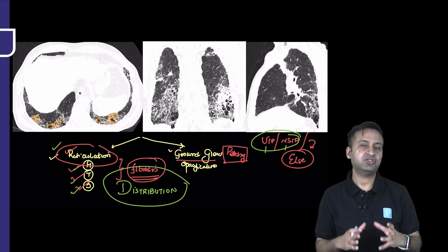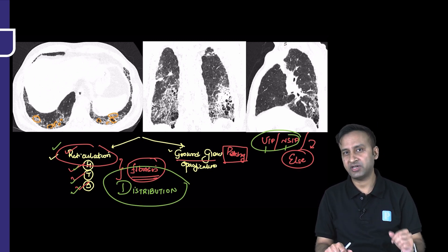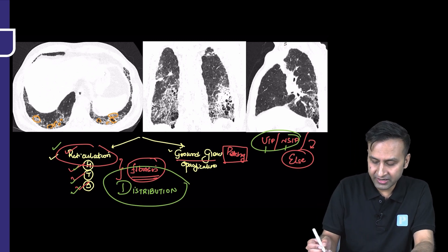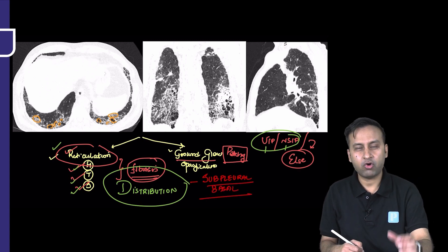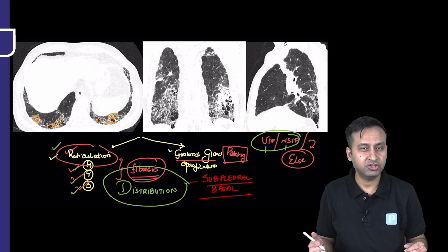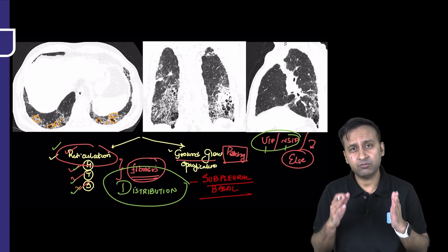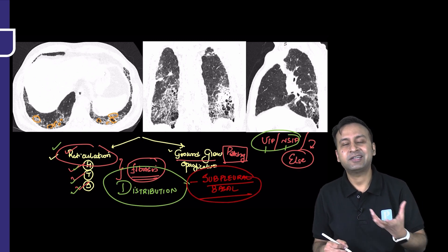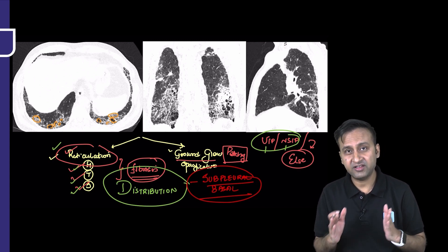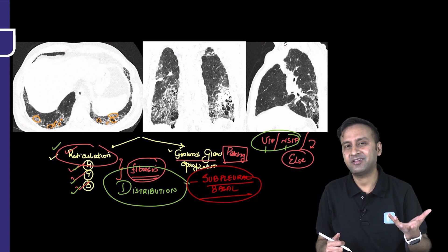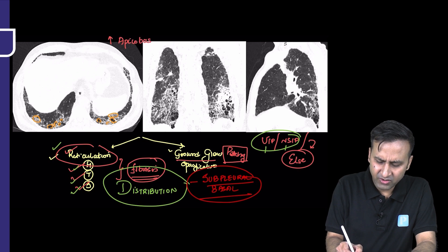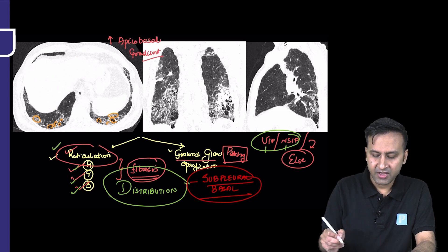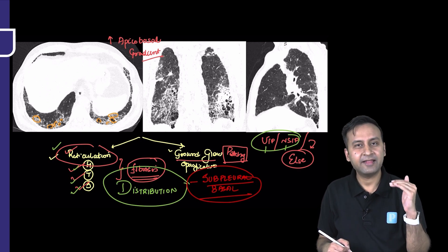In fact, in HRCT of ILDs, the entire diagnosis of fibrosing ILDs is going to be based on distribution. The distribution here is predominantly subpleural and basal. If a disease starts in the basal aspects of the lungs and honeycombing is present predominantly in subpleural regions, it is very likely to be UIP. This is the most important differentiating factor between UIP and other fibrosing ILDs. The apices are relatively spared — some describe this as an increasing apicobasal gradient — while the bases are the most involved.